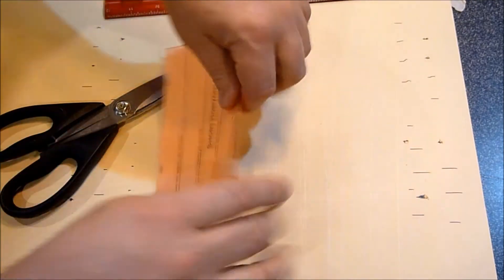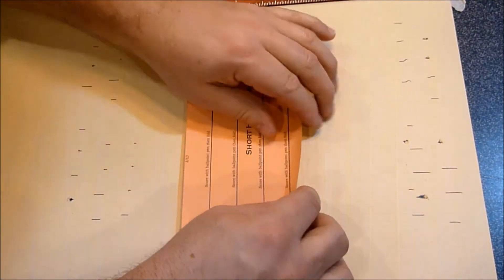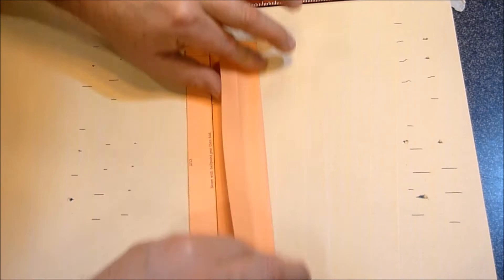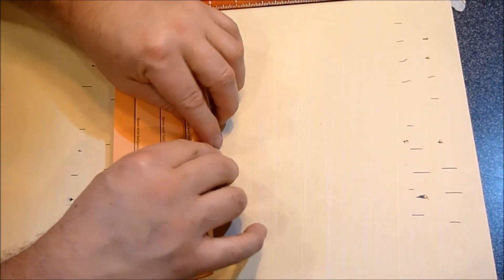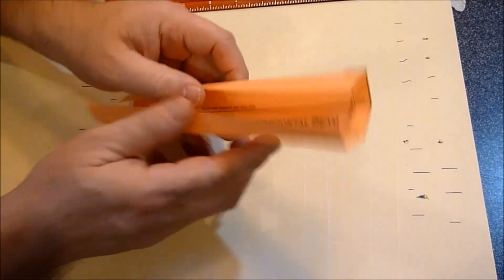So we have all those cut. Then we just fold on the seams that we created with our ballpoint pen and put it together.